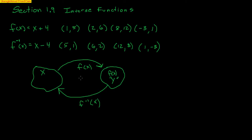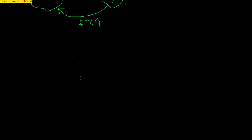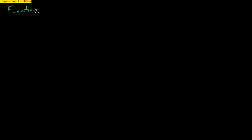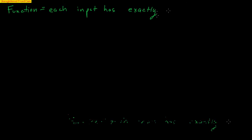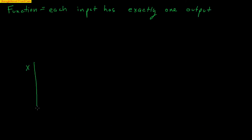An inverse function takes it in reverse. Now let's define a function: a function says each input has exactly one output. For example, inputs 1, 2, 3, 4 go to outputs 6, 7, 22, 99 respectively. As long as 1 doesn't go anywhere else, it's a function. Each input has exactly one output.